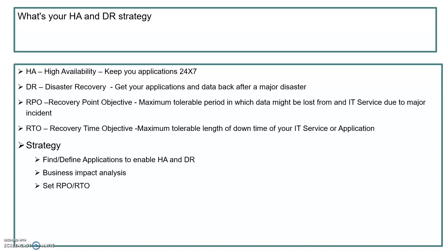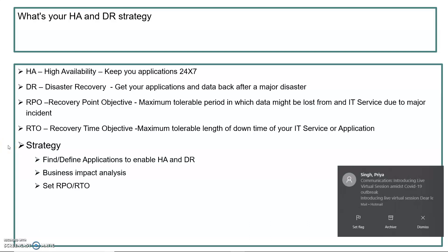For example, if your application is in production, you might be able to sustain 15 or 30 minutes of downtime — that is your RTO. For RPO, if you have configured 4-hour backups and the server goes down at 3 hours 59 minutes, the data from those nearly 4 hours is lost. If your business can still sustain that data loss, that is your RPO. These two objectives help you define your HA and DR strategy.